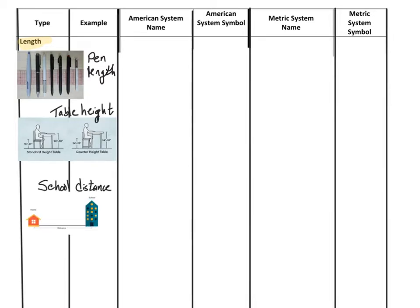In the American system, we would say that the pen is six inches long, abbreviated as 6 in. We would tell you that the table is three foot tall, abbreviated 3 ft for foot. And we might say that the school is five miles away using the abbreviation MI for miles.